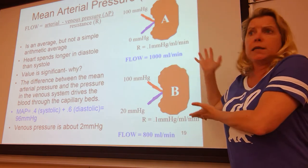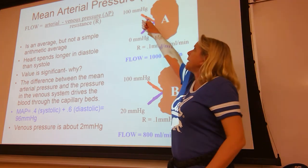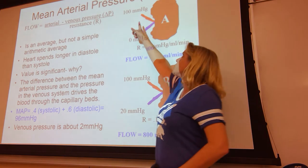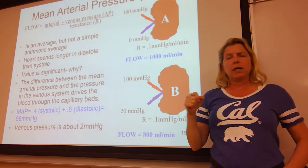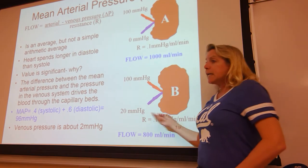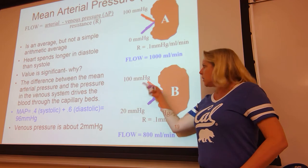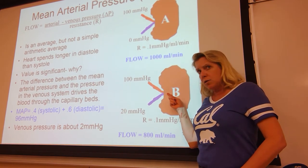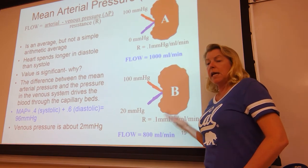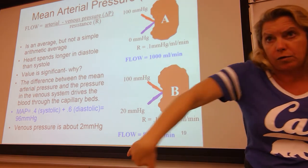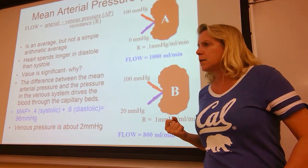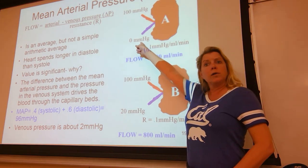Here are two poorly drawn kidneys. Blood flows into the kidney through the renal artery and out through the renal vein. In Kidney A, renal artery pressure is 100 mmHg and renal vein pressure is zero, giving a pressure gradient of 100. In Kidney B, renal artery pressure is still 100 mmHg but the renal vein pressure is now 20. The pressure gradient went down, so the flow rate through that kidney would be lower because the pressure gradient isn't as high.